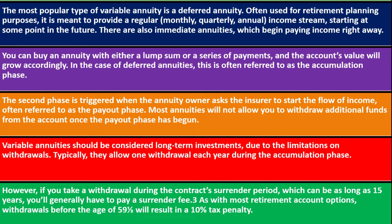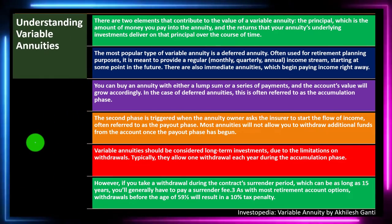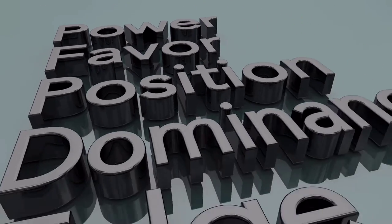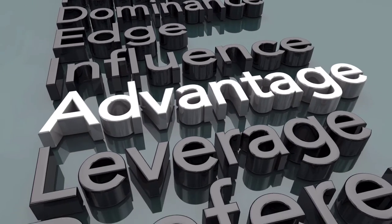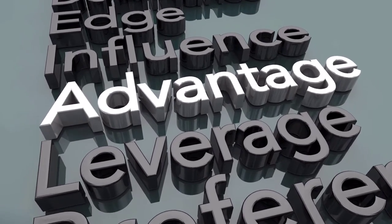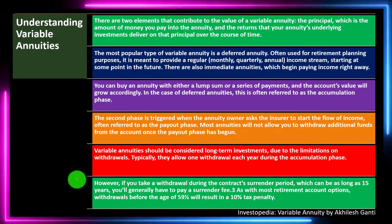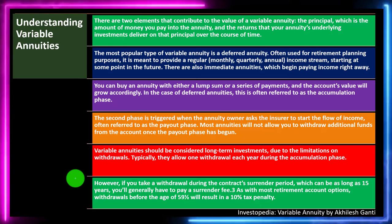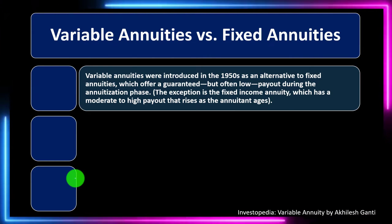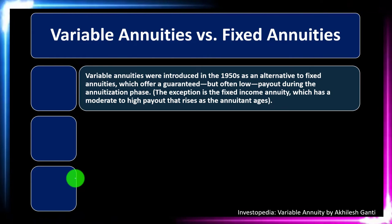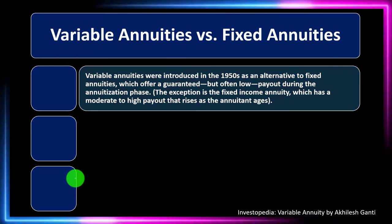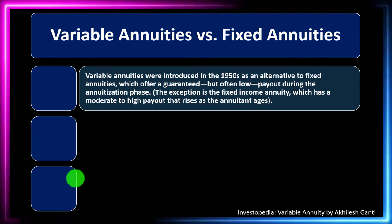As with most retirement account options, withdrawals before age 59 and a half will result in a 10% penalty. That's because you possibly received a tax advantage by putting money into an annuity. The IRS wants you to save for retirement; if you take the money out before 59 and a half, they penalize you for utilizing that tax advantage — that's the downside of the tax advantage component.